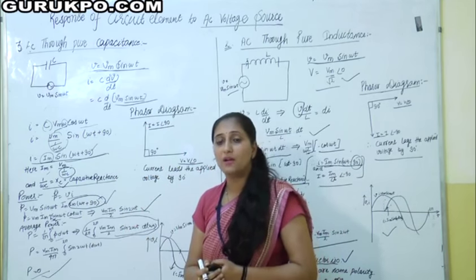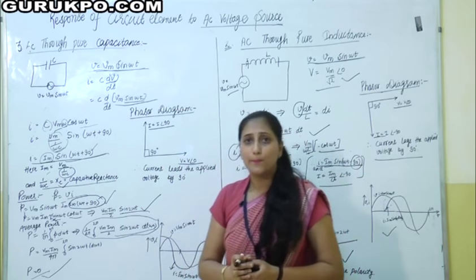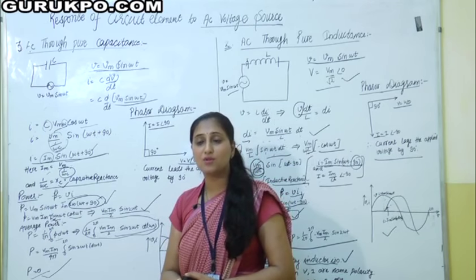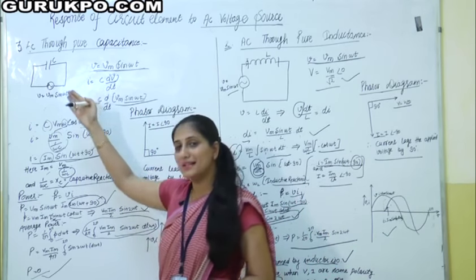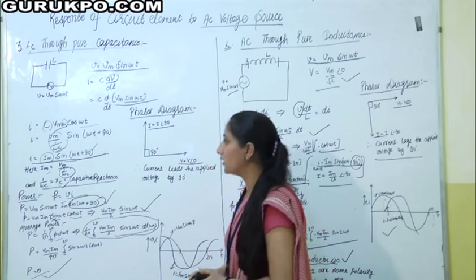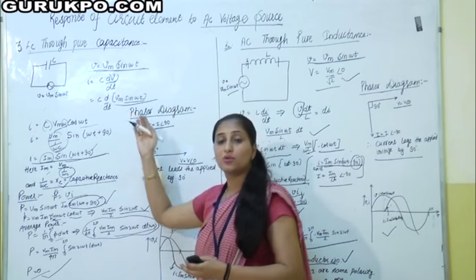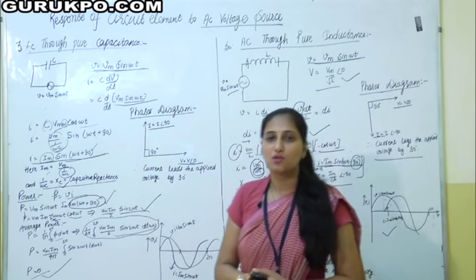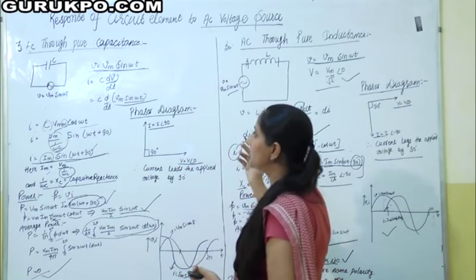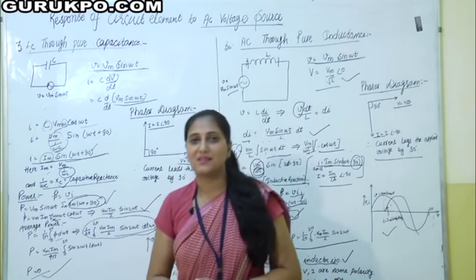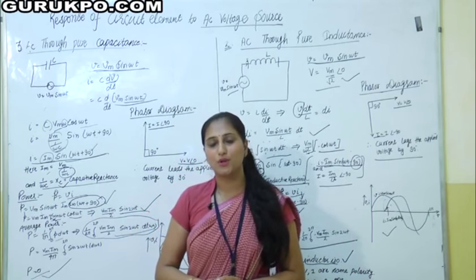We have zero average power across a capacitor. But the instantaneous power across a capacitor pulsates at double the frequency. Positive power means storage of electrical energy in the form of electrostatic energy across the capacitor — that is charging. Negative power means release of electrostatic energy back through the supply — that is discharging. This was all about the three basic elements of our AC circuits: resistance, inductor, and capacitance. Thank you for watching. For more details, log on to www.gurukpo.com.